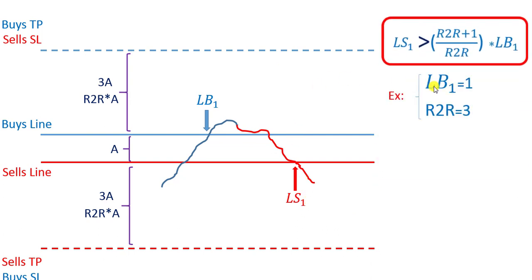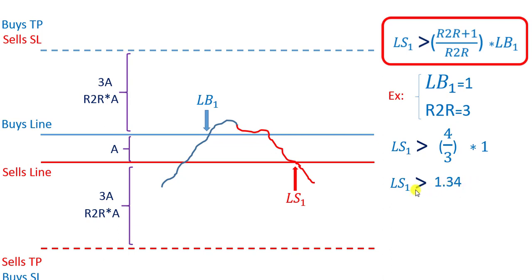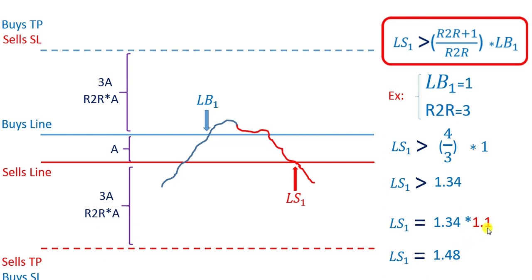As an example, if the lot size of the first buy B1 equals 1 and the risk-to-reward equals 3, then based on this formula the lot size of the first sell must be greater than 1.34. In order to cover commission, spread, and swap, I usually multiply it by 1.1, so it would be 10% higher and the lot size of the first sell would be 1.48. Of course you can use your own percentage — maybe 1.2 or 1.05 — but I prefer to multiply by 1.1 and consider it 10% higher based on my broker.